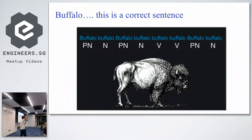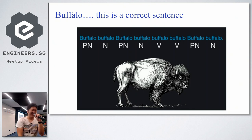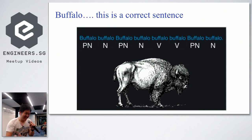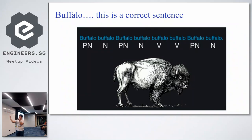Here's an interesting linguistic example: 'Buffalo buffalo buffalo buffalo buffalo buffalo buffalo.' Can somebody tell me — is that a correct sentence? It is a correct English sentence. It means buffalo from the city of Buffalo are being bullied by other buffalo from the same city. 'Buffalo' is the city name, 'buffalo' is the animal, and 'buffalo' is a verb meaning to bully. One word representing three different meanings — that's what makes NLP challenging.